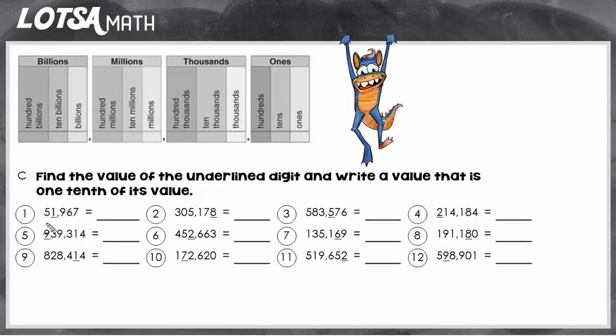So let's look at number one. First we're going to find the value of the underlined digit. This one is in the thousands place, so its value is one thousand. And then we're going to find a value that is one-tenth of that, or you could say we're going to divide that by ten. We're going to do a thousand divided by ten. That might be too hard for you.